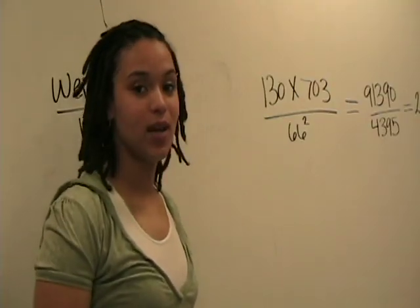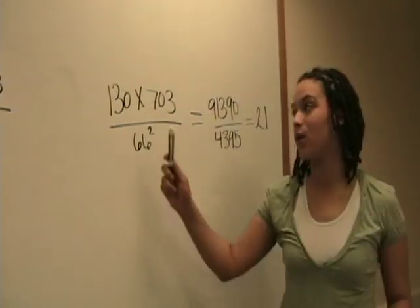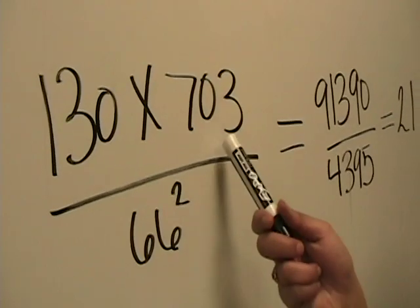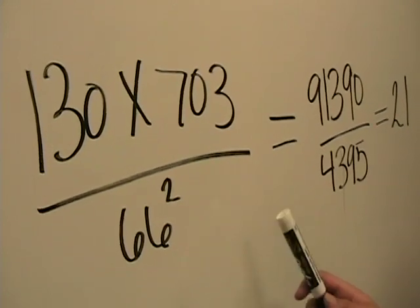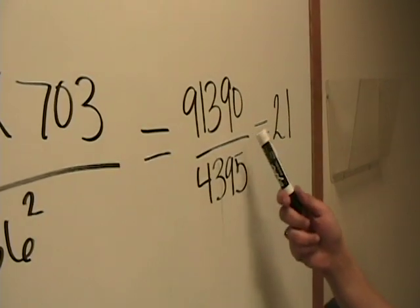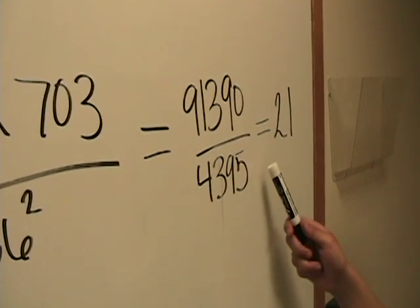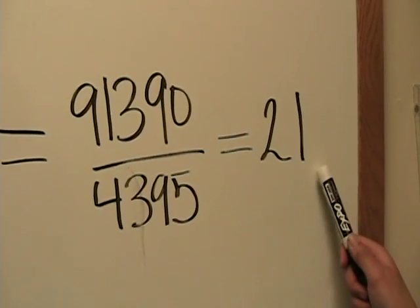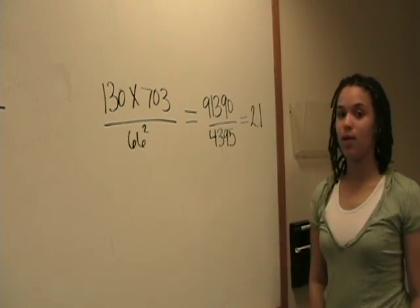To calculate my BMI, I multiply 130 times 703 divided by 66 squared, which equals 91,390 divided by 4,395, which equals 21 — my BMI.